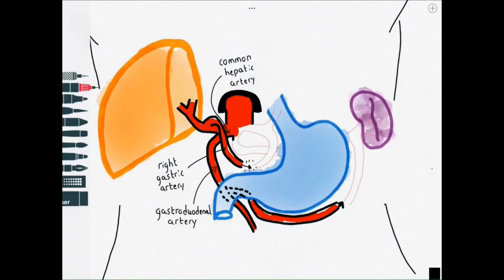From the gastroduodenal artery we get the right gastroepiploic artery which curves along the greater curvature of the stomach to complete its anastomosis with the left gastroepiploic artery.